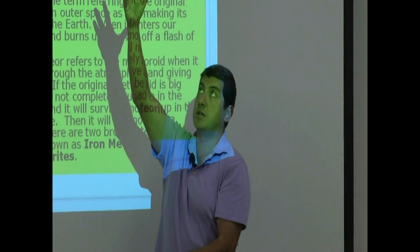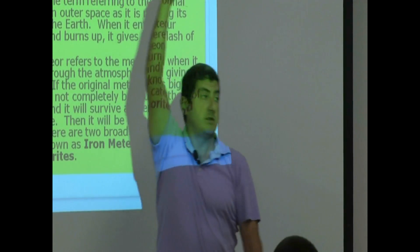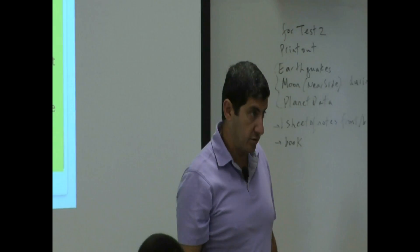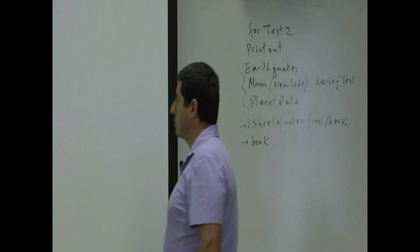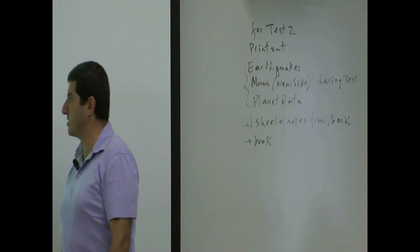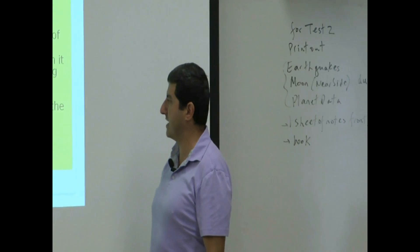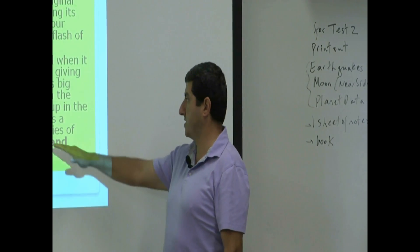Meteor is through the atmosphere. When it's in outer space, meteoroid. There are two broad categories of meteorites known as iron meteorites and stony meteorites. One is iron, one is stony.